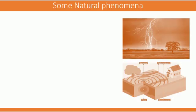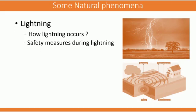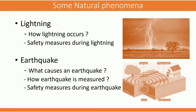The next topic is Some Natural Phenomena. In this chapter, we will be covering two natural disasters. The first is lightning — we will discuss how lightning occurs and what safety measures we need to take during lightning. The next is earthquake — we will discuss what causes an earthquake, how it is measured, and the safety measures to take during an earthquake.